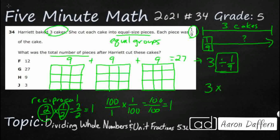Think of it as the inverse — think about flipping it upside down. What if we just flip one-ninth? You would get nine-over-one. But notice we don't really need nine-over-one — nine wholes is simply nine. And look at that: three times nine. That's going to get you 27, and our answer is G.